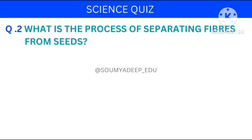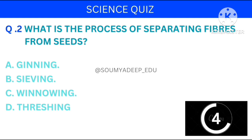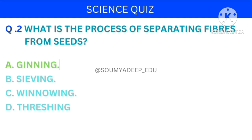What is the process of separating fibers from seeds? The options are: ginning, sieving, winnowing, threshing. Your time starts now. The answer is ginning.